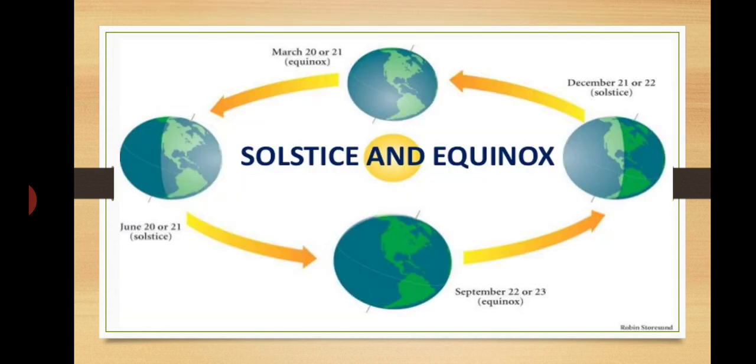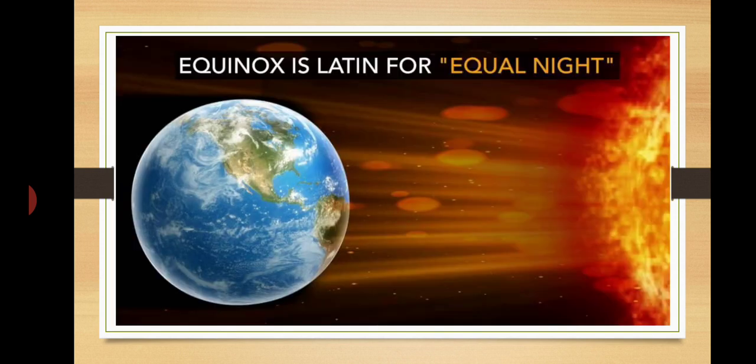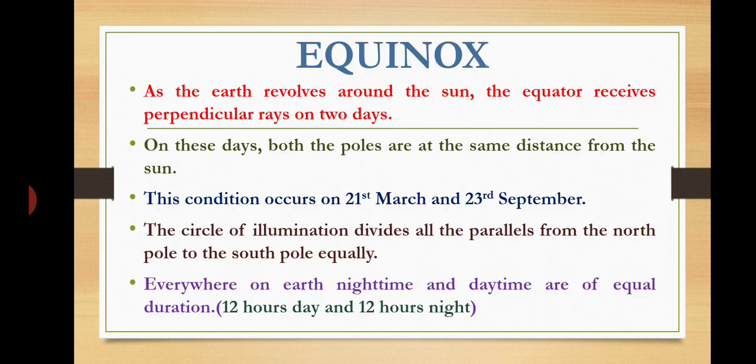Solstice and Equinox. Equinox is Latin for 'equal night.' As the Earth revolves around the Sun, the equator receives perpendicular rays on two days. On these days, both poles are at the same distance from the Sun. This condition occurs on 21st March and 23rd September. The circle of illumination divides all parallels from the North Pole to the South Pole equally — everywhere on Earth, daytime and night time are each 12 hours.